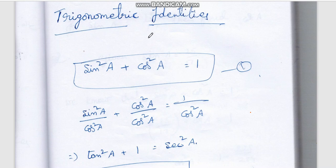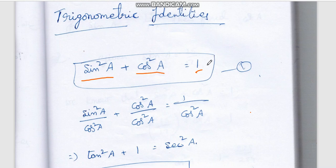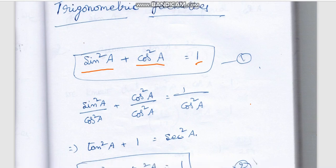Alright, let's get into the topic. The topic name is Trigonometric Identities. An identity means it is always true — a formula that holds universally. In Trigonometry, our first identity is: sin²a + cos²a = 1. You should know sin and cos clearly so this formula becomes easy to remember.